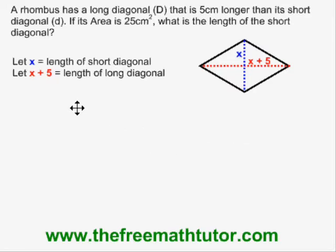Now we can make our equation. We have to know the area formula for a rhombus, and it looks like this: d small diagonal times d long diagonal over two equals a area. Let's fill in this formula with our variables as defined. We get x times x plus five over two equals 25.